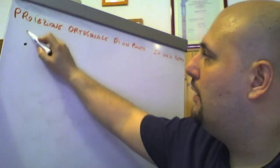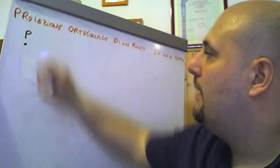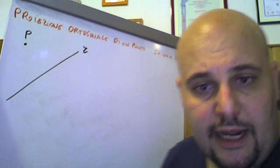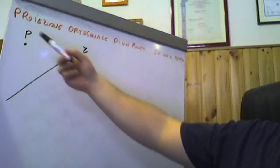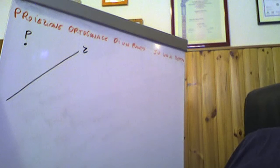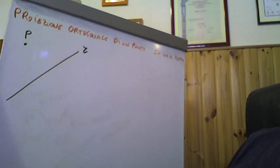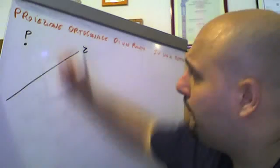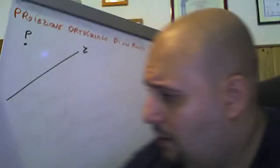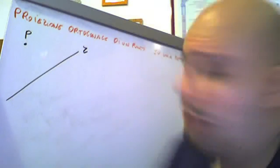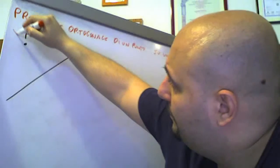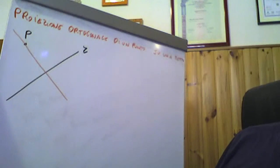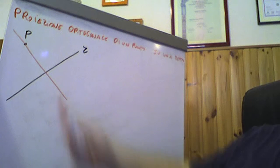Consideriamo un punto che indichiamo con la lettera P ed una retta che chiamiamo generica R. Diciamo come il punto P sia un punto esterno alla retta. Supponiamo di condurre per P un'altra retta che indichiamo con S, che abbia la particolarità di essere ortogonale, cioè perpendicolare ad R.